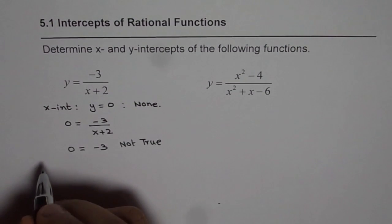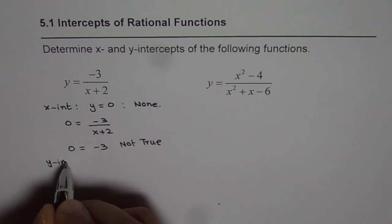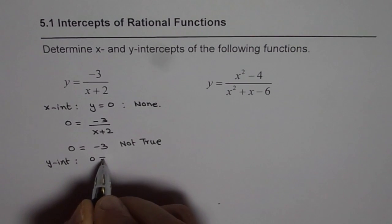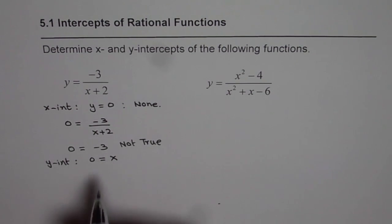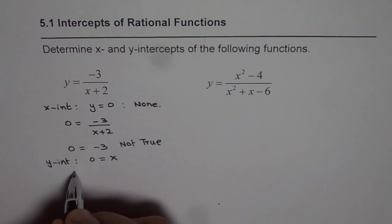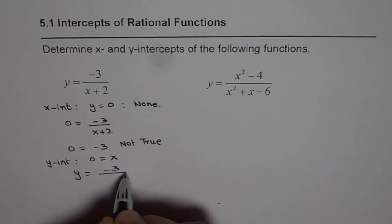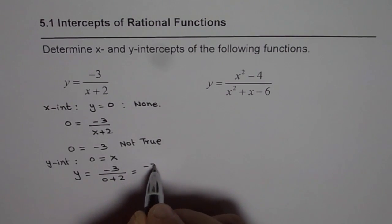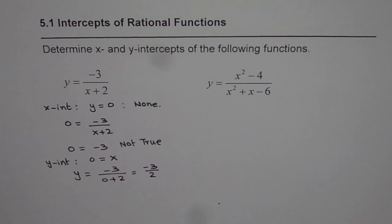Now let us find the y intercept. For y intercept we have to replace x with 0. If I put 0 for x I get y equals minus 3 over 0 plus 2, and that gives us minus 3 over 2 as the y intercept. So for this rational function there is no x intercept, but there is a y intercept at minus 3 over 2.